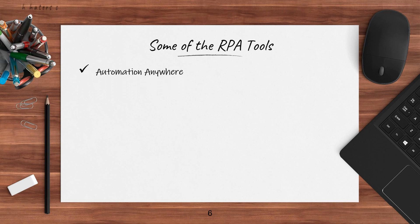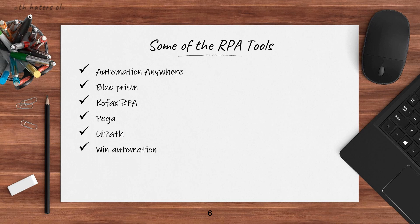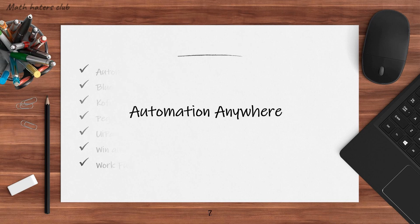Popular RPA tools include Automation Anywhere, Blue Prism, Kofax, Pega, UiPath, WinAutomation, and WorkFusion. In this course, we will focus fully on Automation Anywhere software.